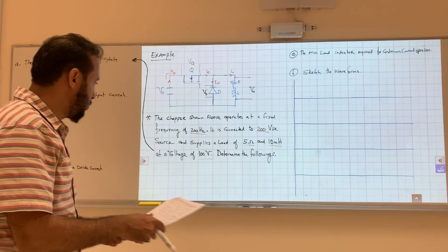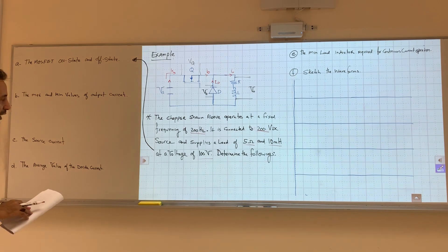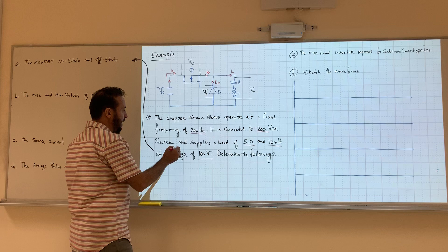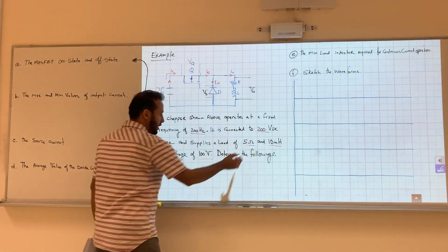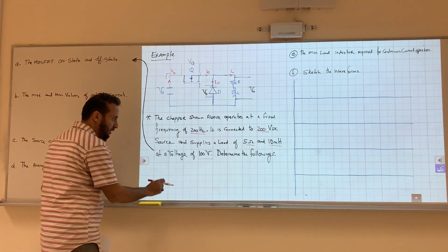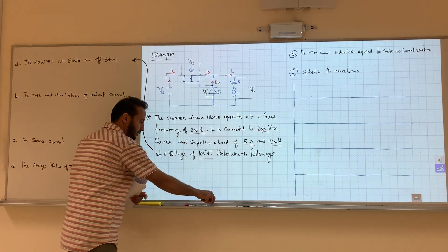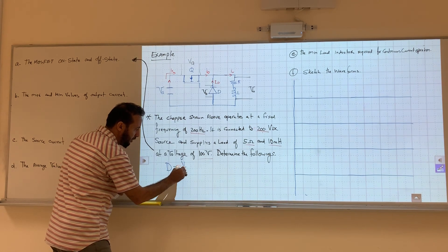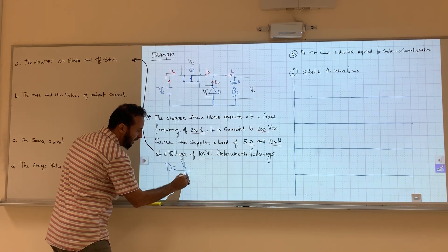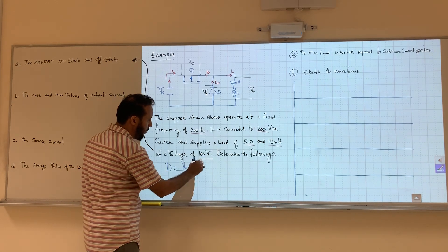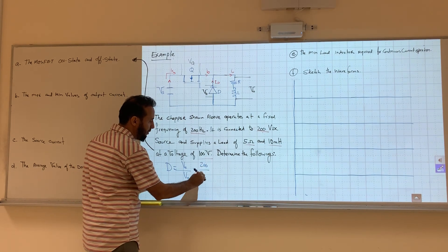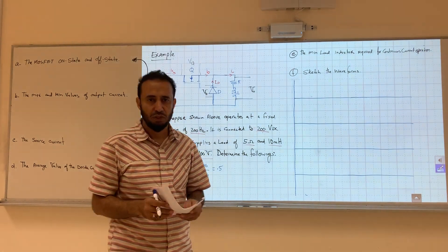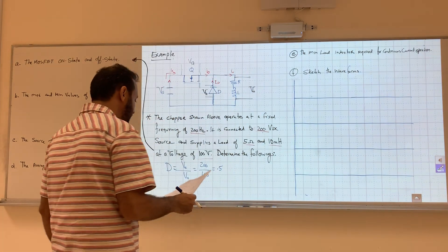So let's look at this. Can we find the duty cycle? Yes, since we have the V-source and we have the V-out. So the duty cycle is V-source divided by V-out, equals 200 divided by 800, equals 0.5. So the duty cycle is 0.5, which means 50% on and 50% off.